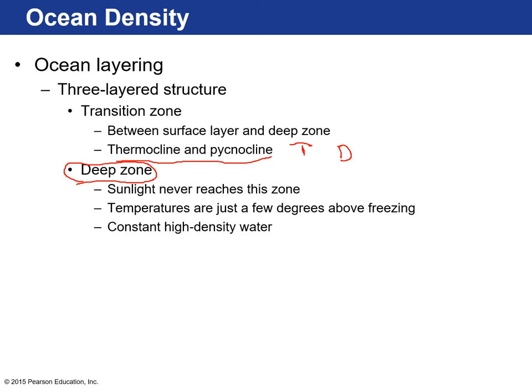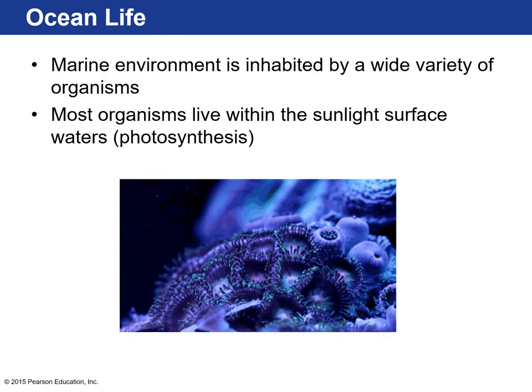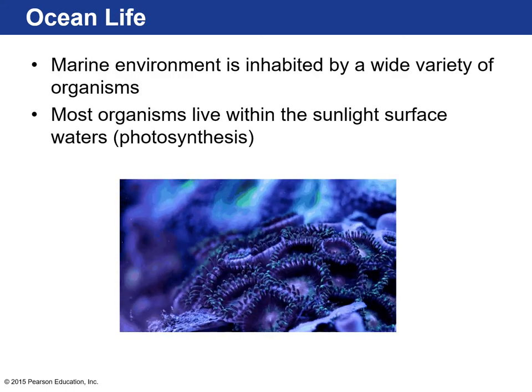The deep zone makes up the rest of the ocean and is the largest layer. In most areas sunlight never reaches this zone except at the poles. Temperature is just a few degrees above freezing and remains constant from the surface near the poles all the way down to three kilometers — cold, constant, high-density water.